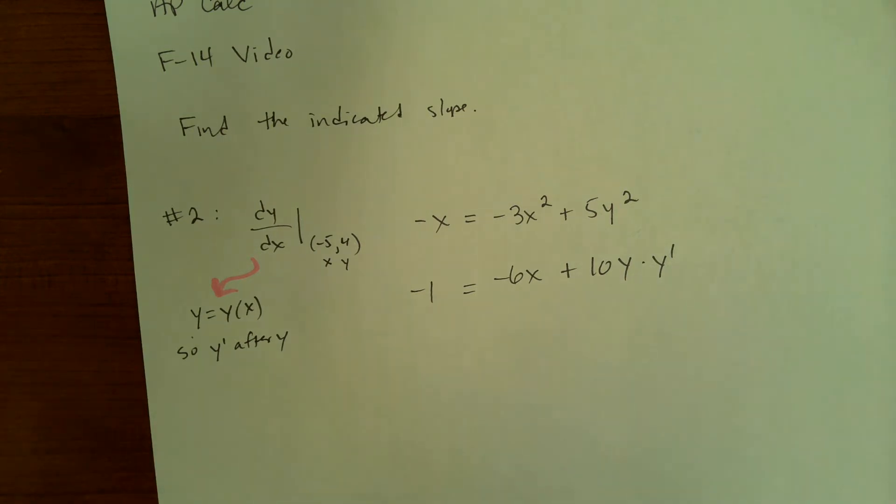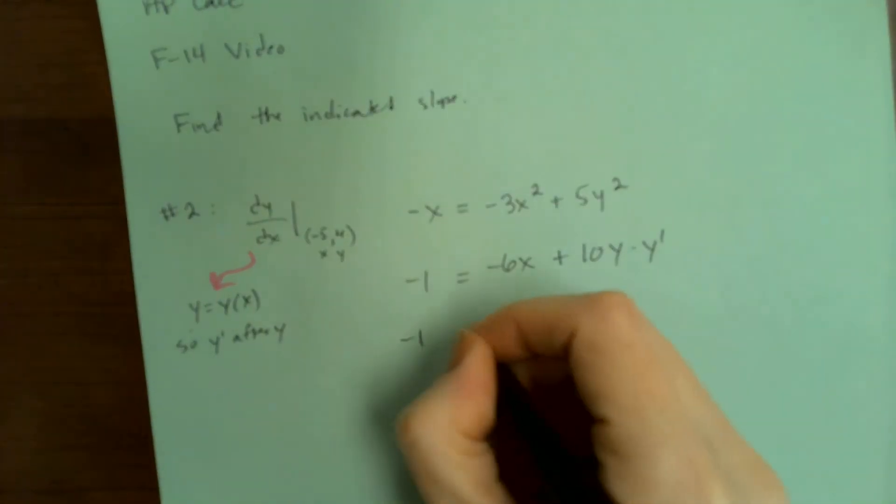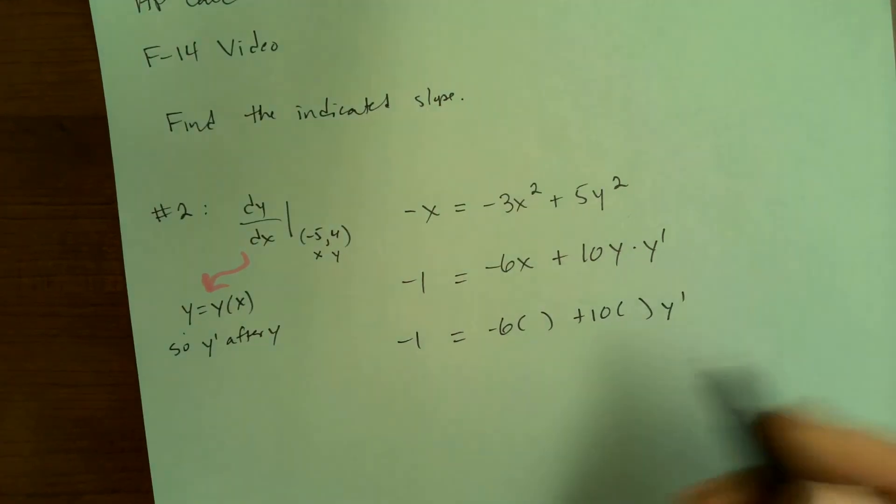This is not too bad, but that in the future will be a lot easier than solving for y prime first and then plugging in the x or y. So if it's a problem like this, where you've got implicit differentiation, but you're plugging in some actual coordinates to find an actual numerical slope, this is the point at which you want to plug in for x and y.